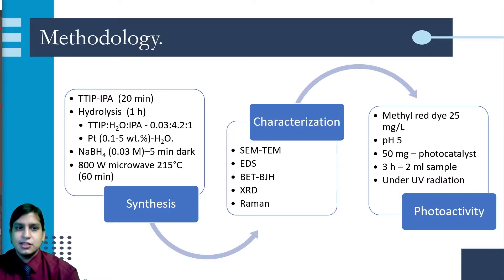The synthesis of the Titanium Dioxide material was achieved through a microwave-assisted sol-gel method in which we incorporated titanium isopropoxide into isopropyl alcohol. The hydrolysis was made through the addition of water in this molar ratio, and for the platinum-doped materials we added 0.1 to 5% of platinum precursors into the water. For the reduction, we used sodium borohydride, and we assisted the method with an 800-watt microwave at 215 degrees Celsius.